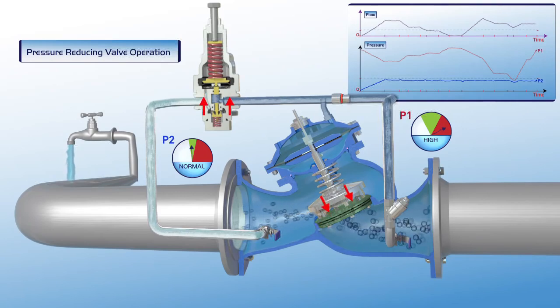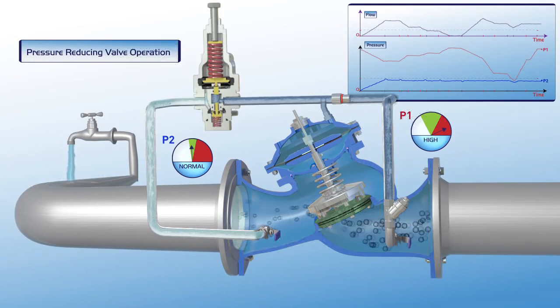As shown on the chart, the valve maintains a constant downstream pressure, even when the upstream pressure rises to a very high level.